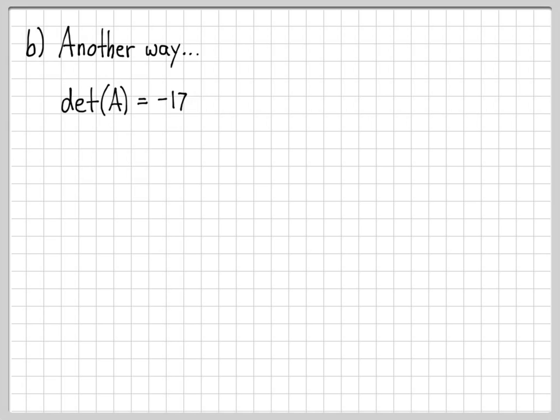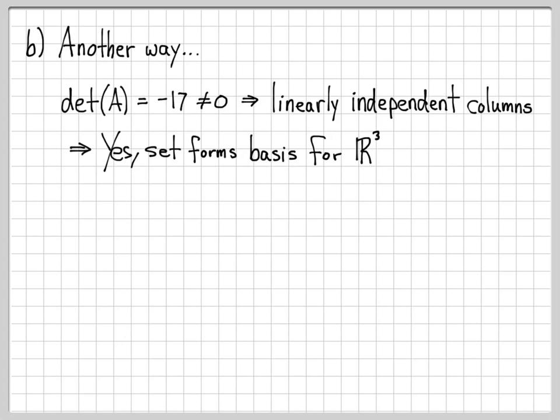We're not going to go through all the computations by hand to do this, but computing that determinant gives us minus 17, which is not equal to zero, and that's the important part. If it was equal to zero, that would imply that they are linearly dependent. Since the determinant is not equal to zero, that means that they are linearly independent. So computing the determinant tells us that we have three linearly independent columns, which means we have enough vectors to form a basis for R³. So this is another way that you can check that the given vectors do indeed form a basis for R³.